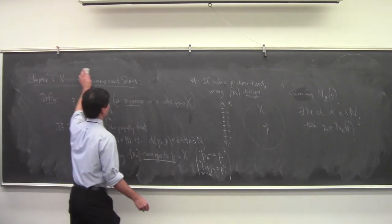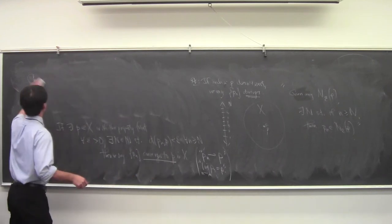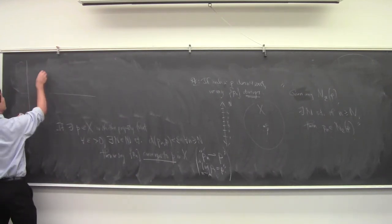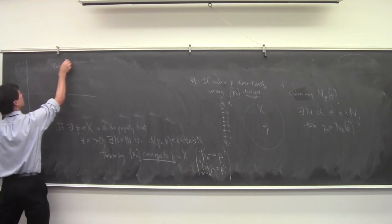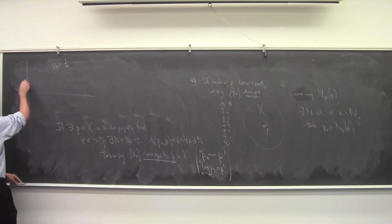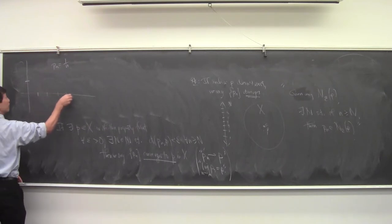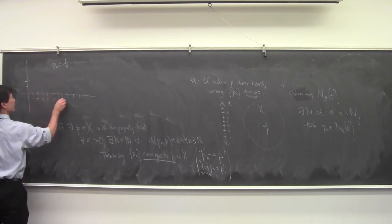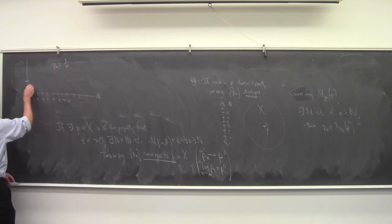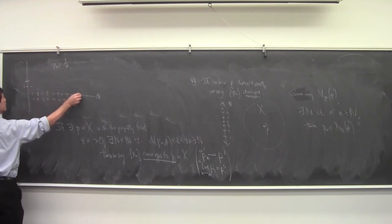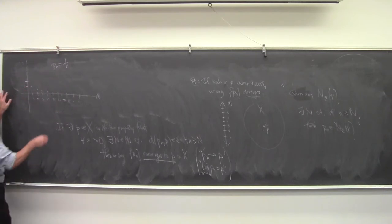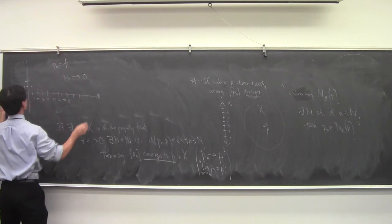The picture to keep in mind is 1/n. Your sequence is 1, 1/2, 1/3, 1/4, 1/5, ... and the p_n converge to zero. If somebody gives you ε = 1/2, you choose N = 3, since 1/3 is smaller than 1/2 and anything past that point is also smaller. For ε = 1/1,000,000, you choose N = 1,000,001. No matter what ε you're given, you can find a time that satisfies it.